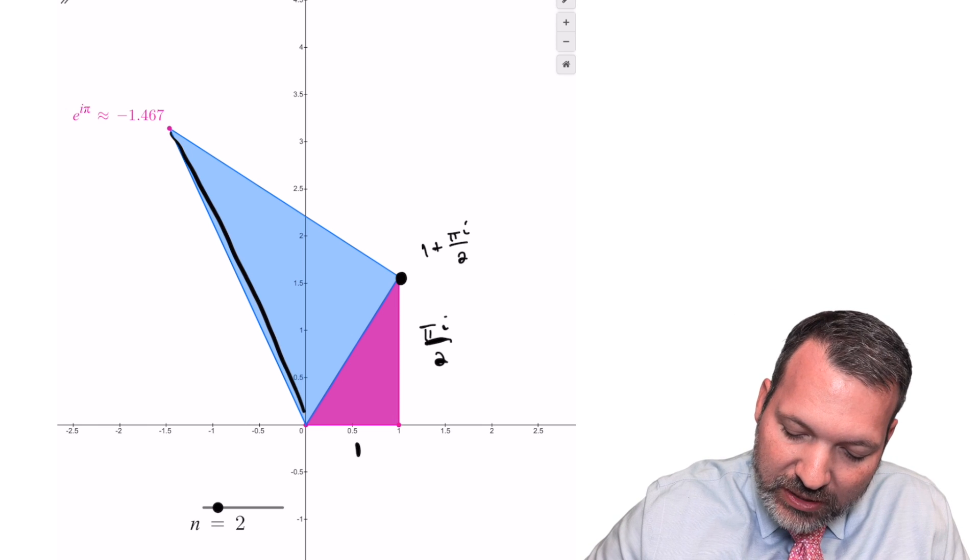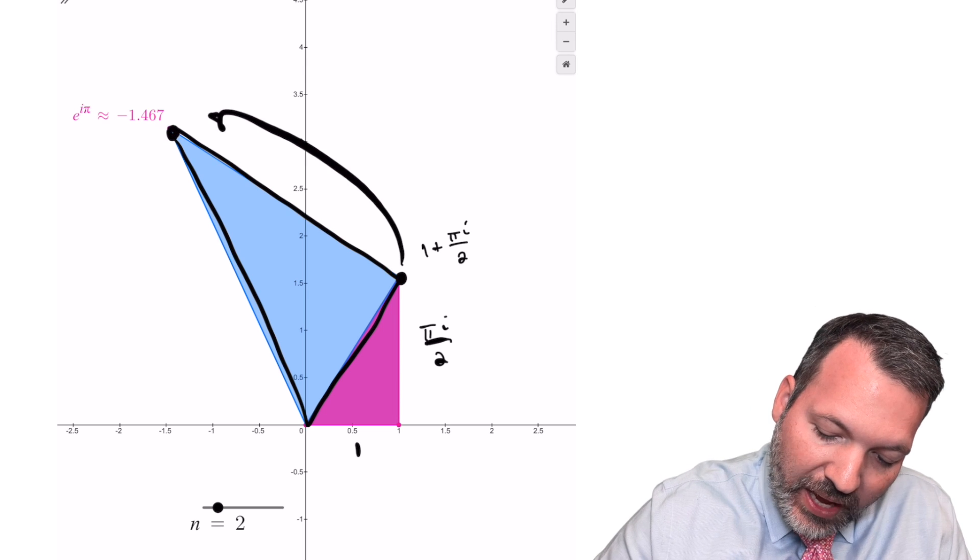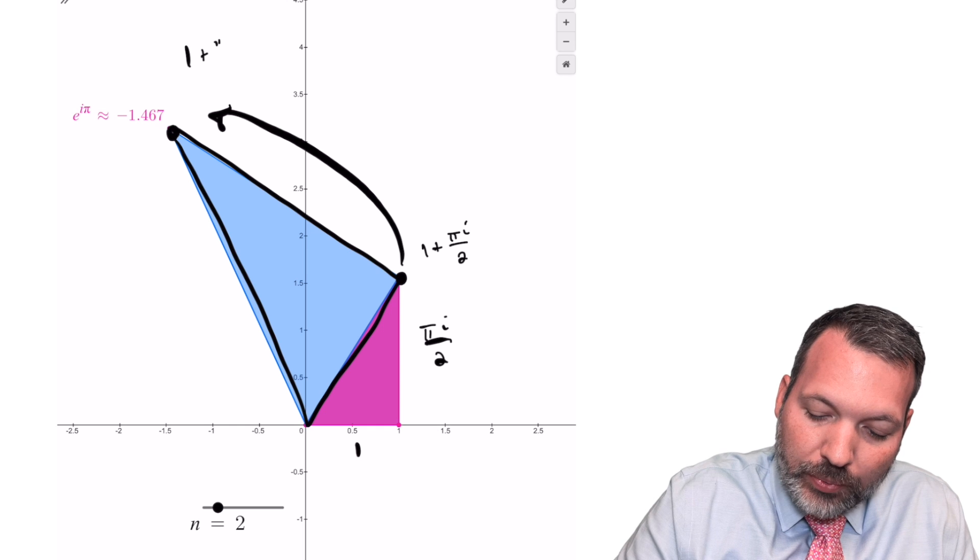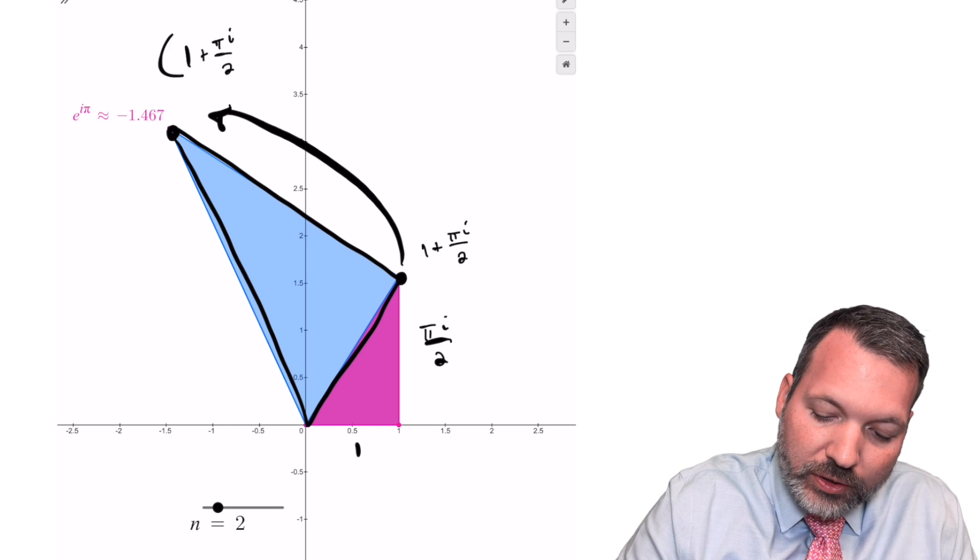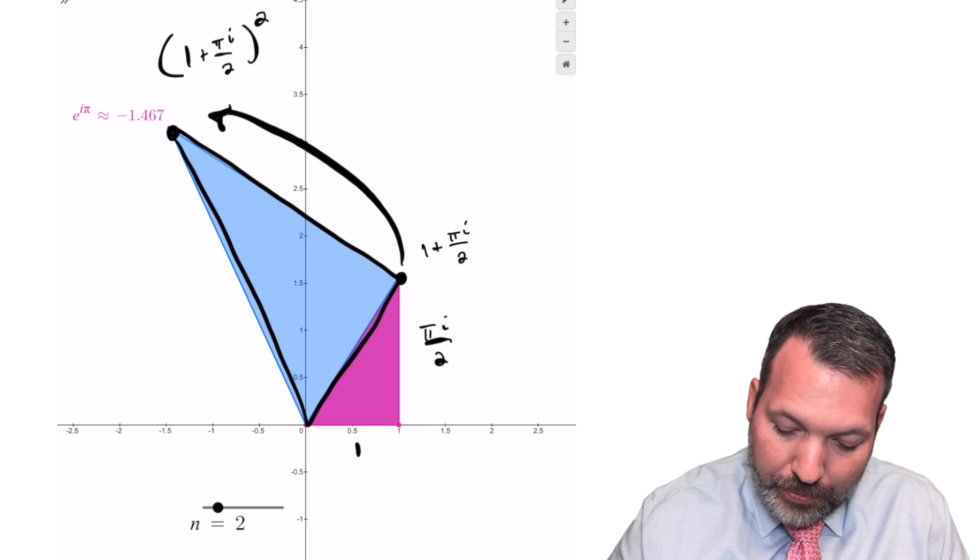When we draw in this similar triangle here, this vertex, the rotation of the original vertex, represents the complex number one plus pi i over two squared. If we worked out that value, we would have some real part and some imaginary part.